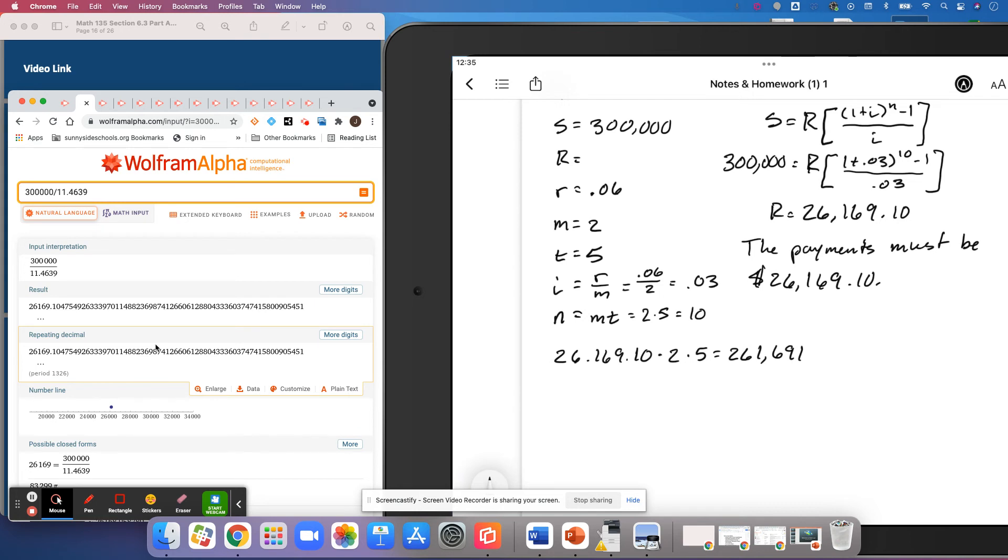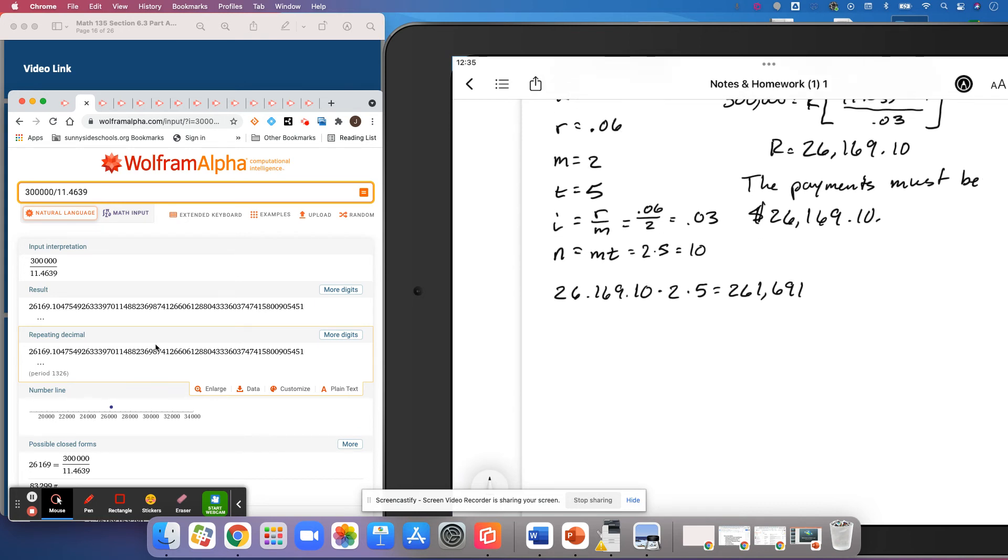That would get us to $261,691. And so the company pays in $261,690 to get $300,000 to pay the bill.